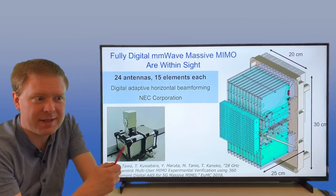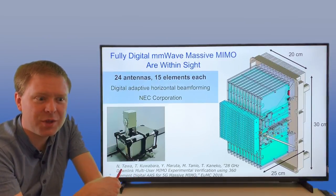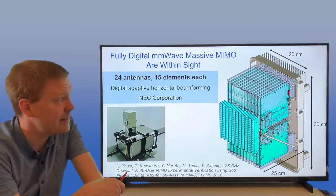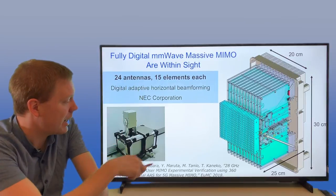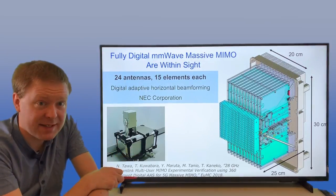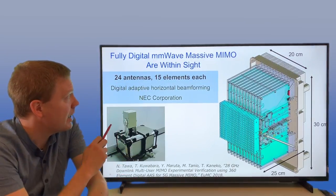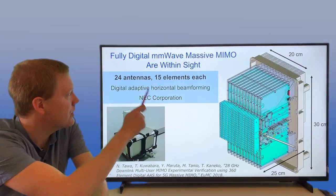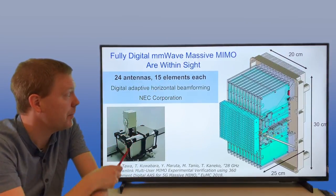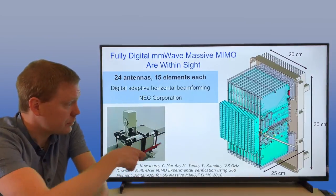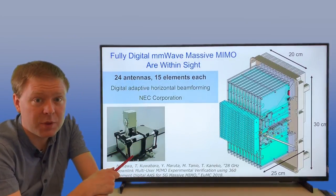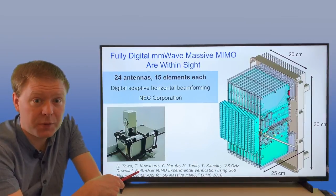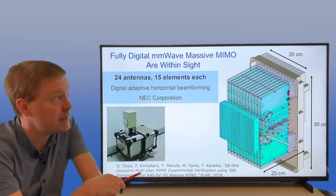What people have been talking about is that this is too complicated to build. You need to use analog beamforming of the traditional kind instead. But here's a setup that was done at NEC where they have 24 antennas, 15 elements connected to each antenna, and that way they can do fully digital adaptive horizontal beamforming. We will in a few years see that fully digital beamforming is done at both traditional frequencies and on millimeter wave frequencies.